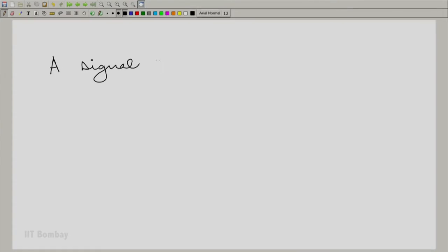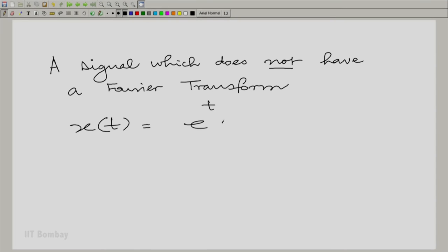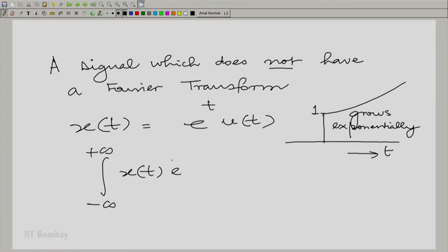Let us take an example of a signal which does not have a Fourier transform. All that we need to do is make the exponential positive. We write e^(t)u(t). The signal will grow exponentially without bounds starting from 1. Here, the integral from minus to plus infinity of x(t)e^(-jωt)dt is divergent. It does not converge. So this signal has no Fourier transform.